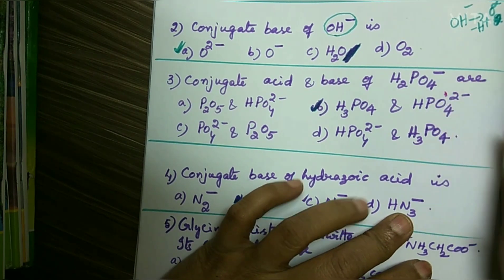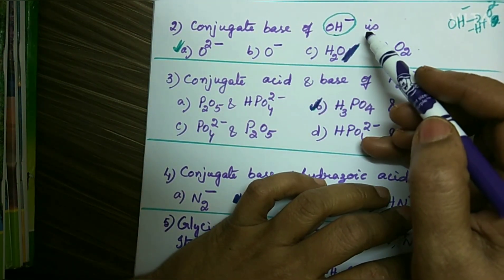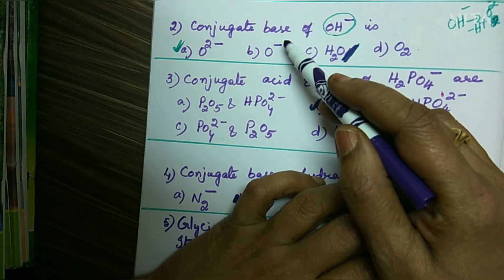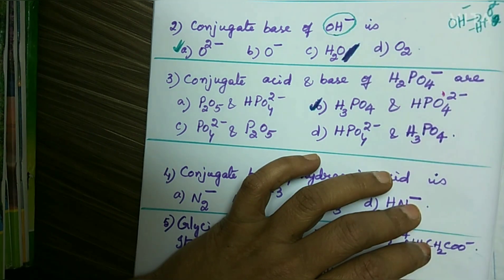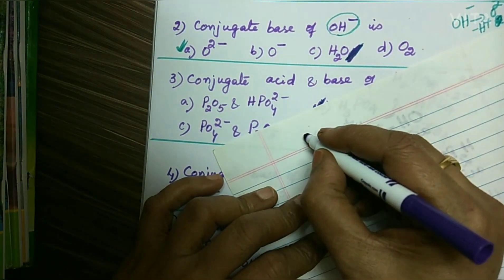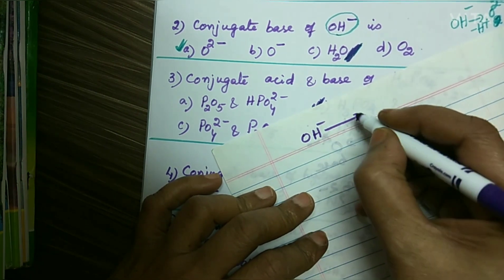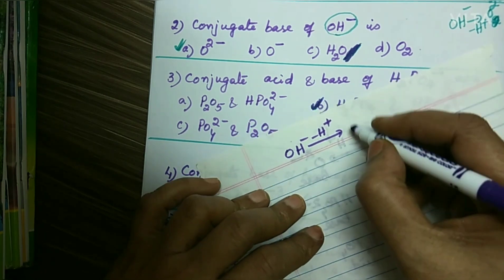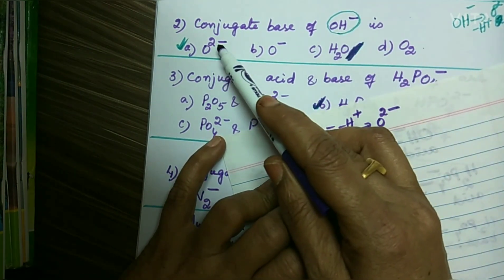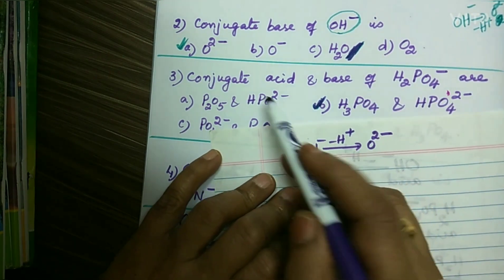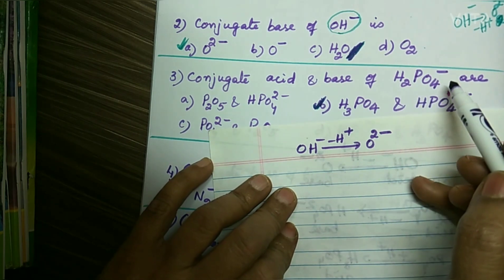Now let us see a few questions from previous JEE Mains examinations on the conjugate acid-base pair topic. The first question: what is the conjugate base of OH⁻? To find the conjugate base, OH⁻ must act as an acid and lose a proton. OH⁻ minus H⁺ gives O²⁻ ion. So, the conjugate base of OH⁻ is O²⁻ ion.